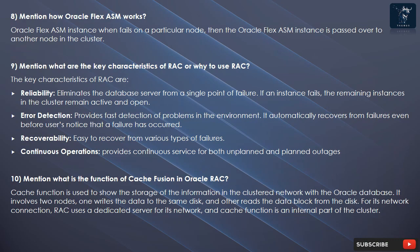Question 9: What are the key characteristics of RAC, or why use RAC? The key characteristics of RAC are: Reliability — eliminates the database server as a single point of failure; if an instance fails, the remaining instances remain active. Error detection — provides fast detection of problems and automatically recovers from failures even before users notice. Recoverability — easy to recover from various types of failures. Continuous operations — provides continuous service for both unplanned and planned outages.